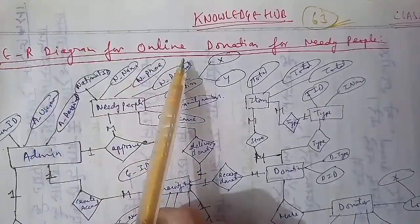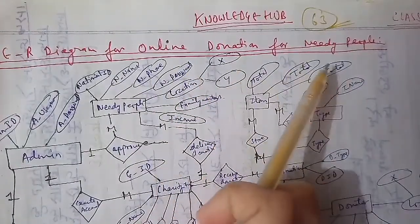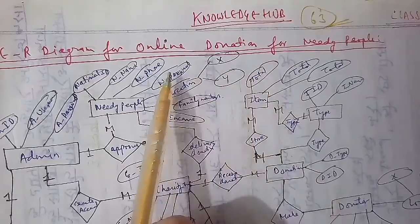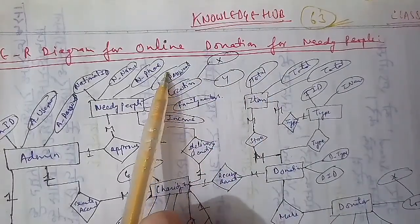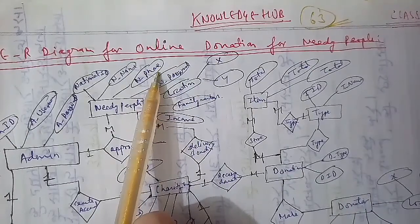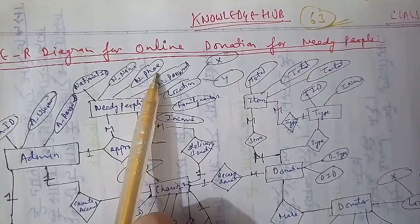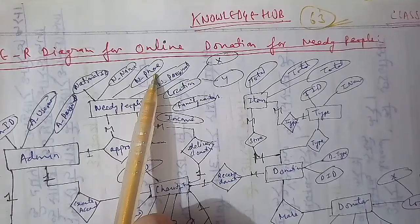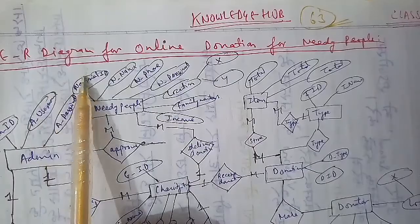Today what we have to discuss is the ER diagram for online donations for needy people — needy people who can receive online donations. We'll discuss the ER diagram for that, which is an important one and useful for your projects. It's a huge request to all viewers to please go through the subscribe button and like, share, and subscribe to our channel so that maximum people can get this information.